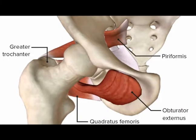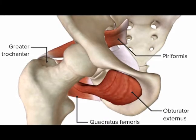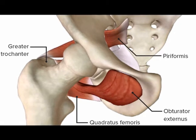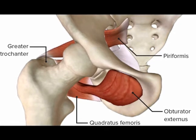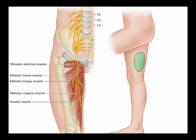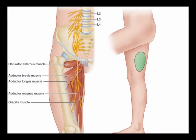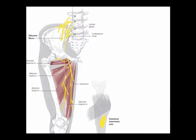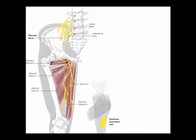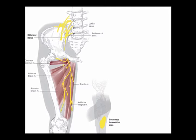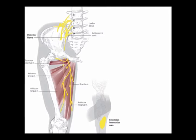The obturator externus muscle originates on the obturator foramen. Its insertion is on the posterior aspect of the greater trochanter. Its innervation is the obturator nerve from vertebral levels L2, L3, and L4, and its concentric actions are hip adduction and hip lateral rotation.